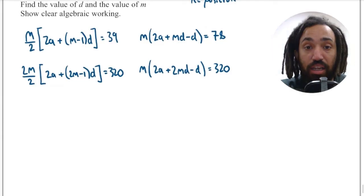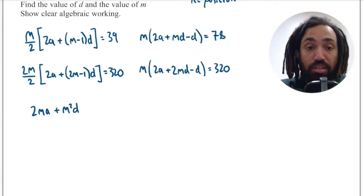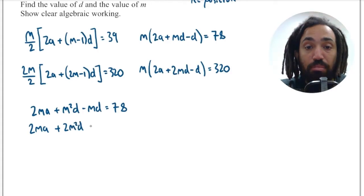I can rewrite both of these equations by multiplying out the bracket and multiplying every term inside the bracket by M essentially, which gives me 2MA plus M squared D minus MD equals 78. And for the other one I get 2MA plus 2M squared D minus MD equals 320.